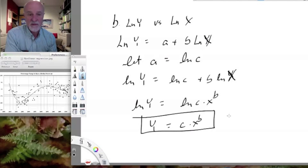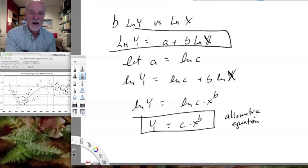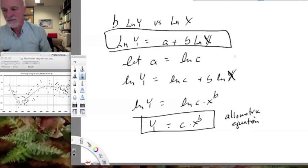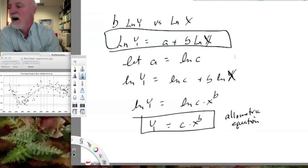So we have a beautiful allometric equation that we derived from a linear regression of log of y on the log of x. And that's a very common function relating two traits to one another in an allometric fashion.